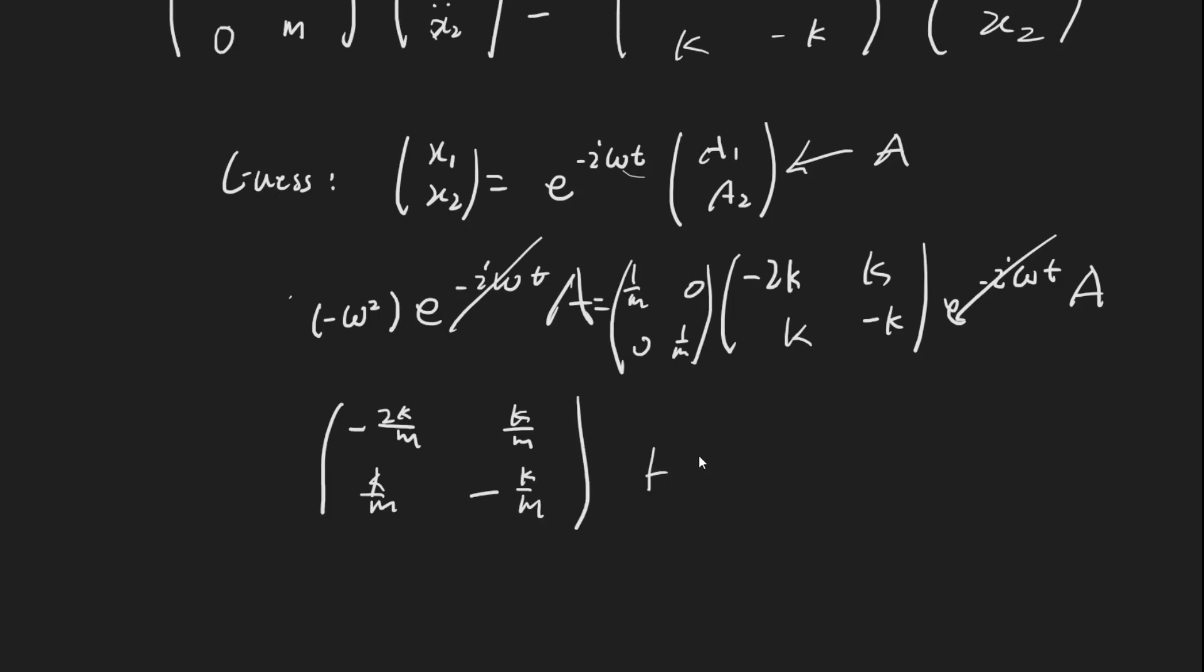And then we're going to have plus omega squared, 0, 0, omega squared, times A. And the reason we get this is because when we factor out the A, we still need to have a matrix here to get that addition correct, and so we get the identity matrix is what we get.